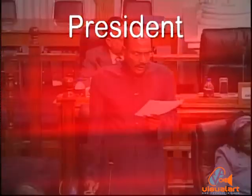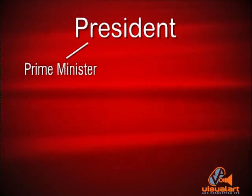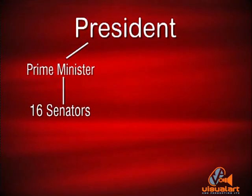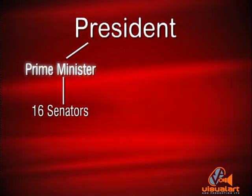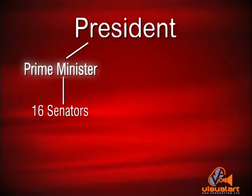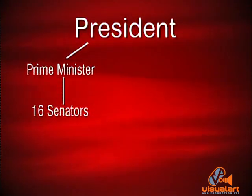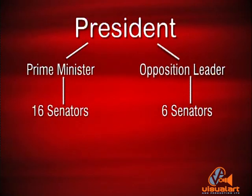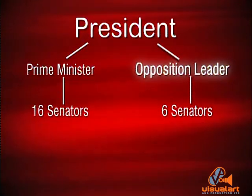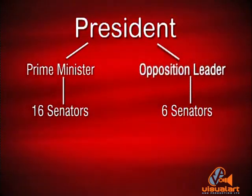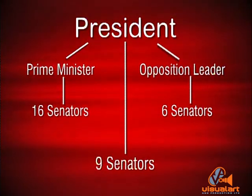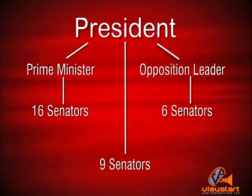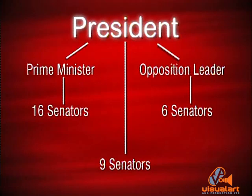16 Senators are appointed by the President acting on the advice of the Prime Minister, and 6 are appointed by the President acting on the advice of the Leader of the Opposition. The remaining 9 Senators are appointed by the President in his discretion.